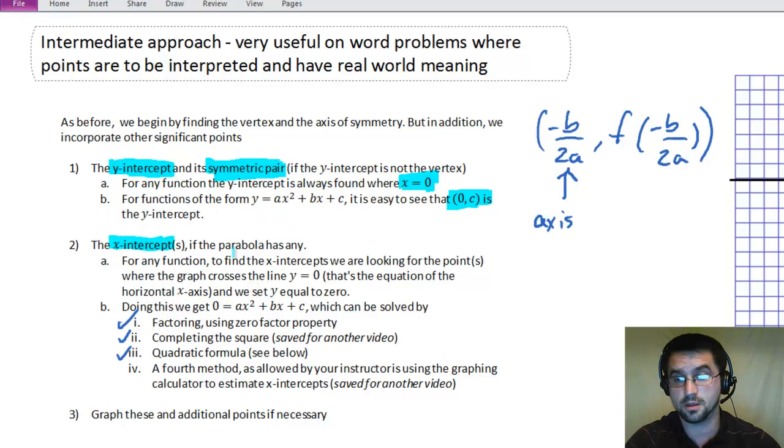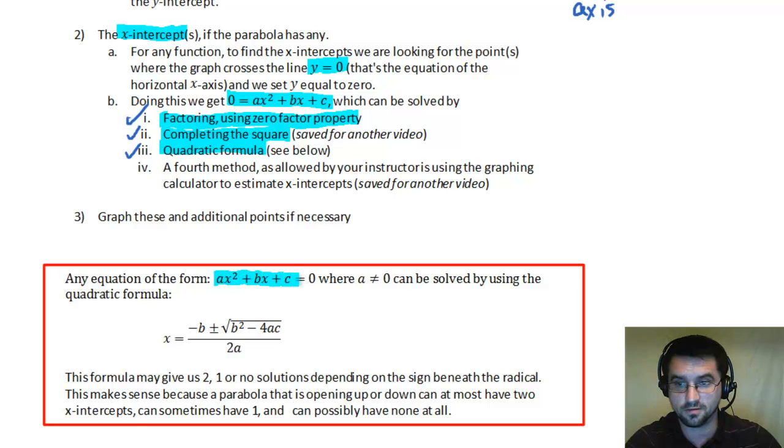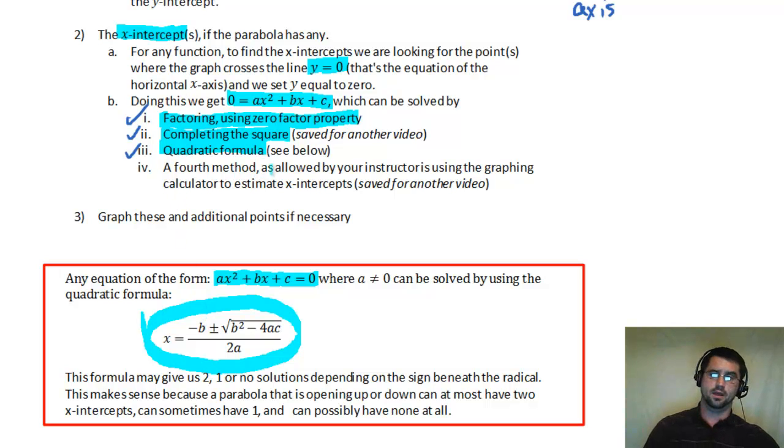After that, we get the x intercept, or x intercepts, if there are any. And we do that by setting y equal to zero. And so we have an equation that says ax squared plus bx plus c equals zero. Which can be solved by factoring, using zero factor property. Completing the square, which I didn't do here. Quadratic formula, which if you forgot what that is, it's down here below. If you have something like this, you solve it using this. And a fourth method, as allowed by your instructor, if you're estimating it. Estimates are good in real world problems. You can estimate the x intercepts by using some functions that are available on your graphing calculator. So that's pretty much it.